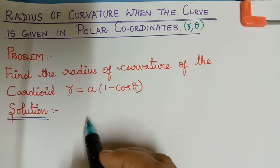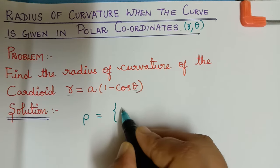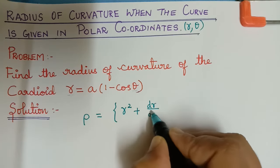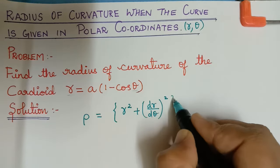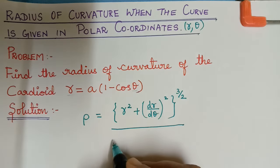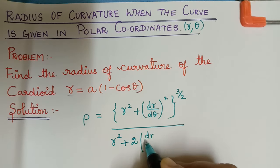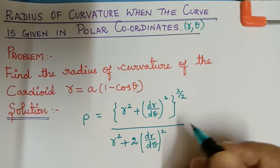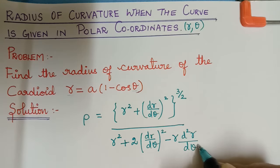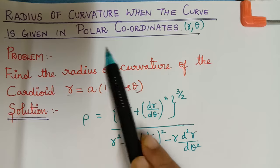The formula for radius of curvature is given by: rho equals, in the numerator, r squared plus (dr/dθ) squared, whole to the power of 3/2, divided by r squared plus 2 times (dr/dθ) squared minus r times d²r/dθ². This is the formula for radius of curvature when the curve is in polar coordinates.